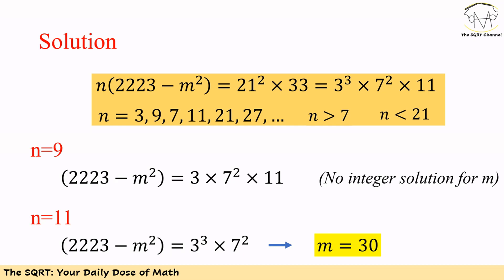So we are going to start with N is equal to 9. Then 2223 minus M² is going to be 3 times 49 times 11. We cannot find any integer solution for M here.